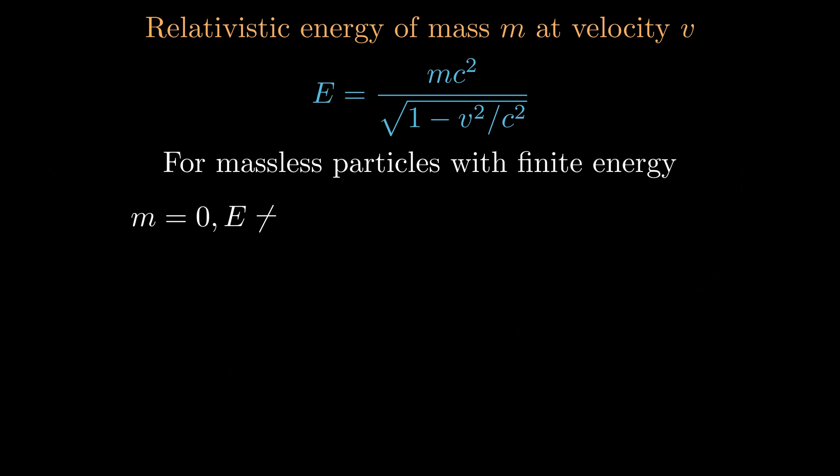Only massless particles like photons can travel at c, since for M equals zero, the equation naturally gives V over c as one.